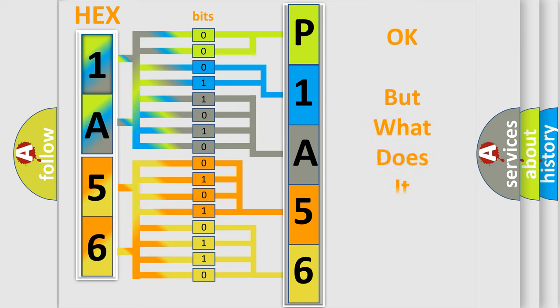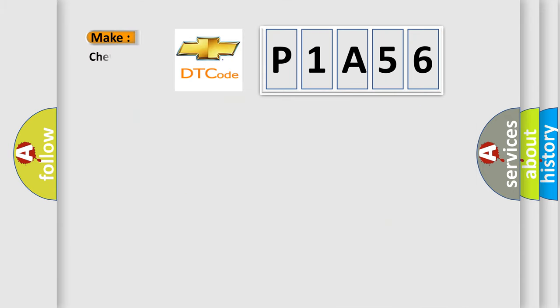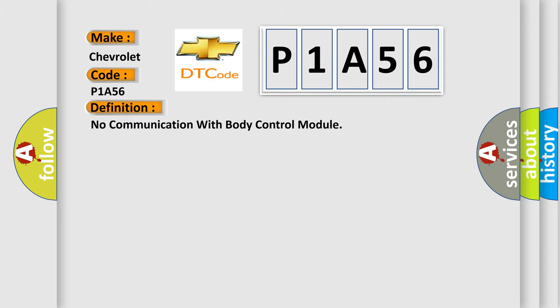The number itself does not make sense to us if we cannot assign information about what it actually expresses. So, what does the diagnostic trouble code P1A56 interpret specifically for Chevrolet car manufacturers? The basic definition is: No communication with body control module.